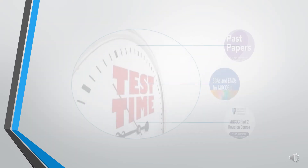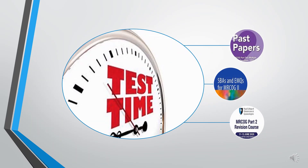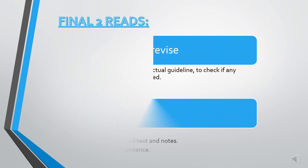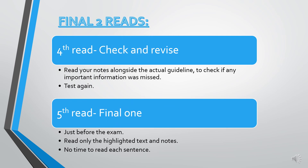Time to test. Take a practice book, past papers, or online course and test your knowledge. You might not score that well — no worries, we have another two reads to go. For your fourth read, read your notes alongside the actual guideline to check if any important information was missed, and test again.